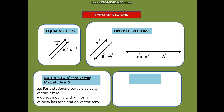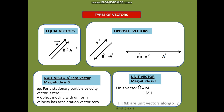Another type of vector is a unit vector. As the name suggests, its magnitude is one. Unit vectors are represented by U-cap, which is equal to M divided by the magnitude of M. I-cap, J-cap, and K-cap are the unit vectors along the X, Y, and Z axes respectively.